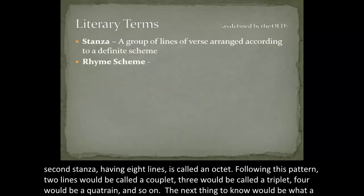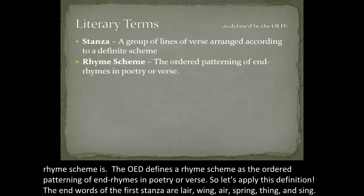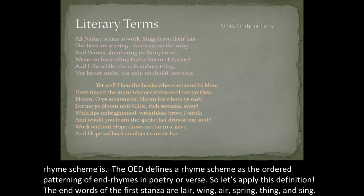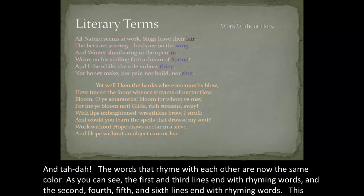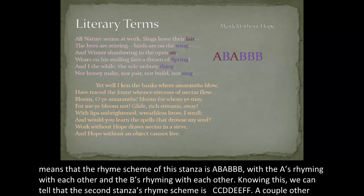The next thing to know would be what a rhyme scheme is. The Oxford English Dictionary defines a rhyme scheme as the ordered patterning of end rhymes in poetry or verse. So let's apply this definition. The end words of the first stanza are lair, wing, air, spring, thing, and sing. The words that rhyme with each other are now the same color. The first and third lines end with rhyming words, and the second, fourth, fifth, and sixth lines end with rhyming words. This means the rhyme scheme of this stanza is ABABBB, with the A's rhyming with each other and the B's rhyming with each other.